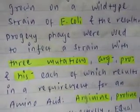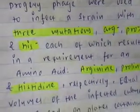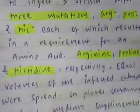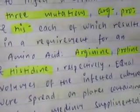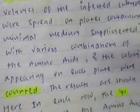Strains are deficient of these three particular amino acids. Each of which results in requirement for an amino acid: arginine, proline, and histidine respectively. Equal volumes of infected cultures were spread on plates containing minimal medium that is supplemented with various combinations of amino acids.